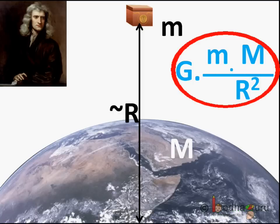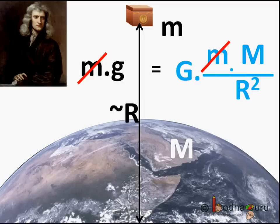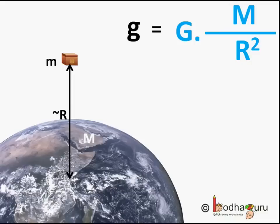This force is equal to mg. So, equating these two, we see m cancels out. This means g, which is the acceleration due to gravity, does not depend on the mass of the falling object, because mass is not even in this equation. So, g is equal to capital G multiplied by capital M divided by r square.